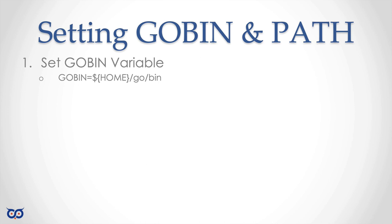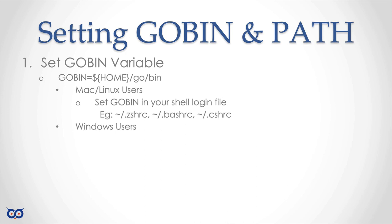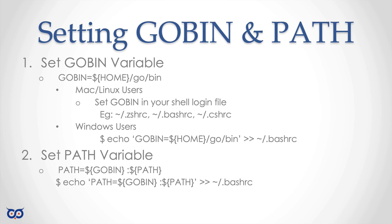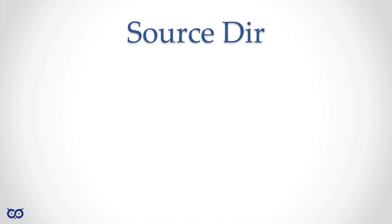To set up your go bin directory, assign it to something like ~/go/bin. For Mac and Linux users this is easy — set it in your login shell. For Windows users, use the Windows method of setting environment variables, or if you installed Git with bash, you can type the export command at the bash prompt. Once go bin is set, update your PATH variable to include it — that's how your operating system finds executables. This command will update your .bashrc if you installed Git.